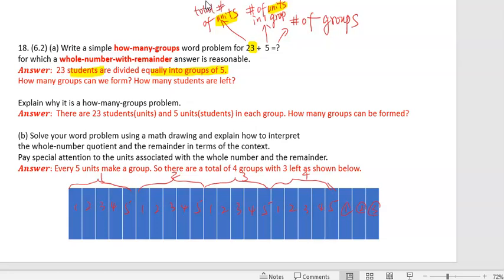To solve this word problem, we can use a math drawing, which is what they ask us to do, instead of using long division. So we take 23 and divide into groups of five. Every five of them, five students, will become a group.